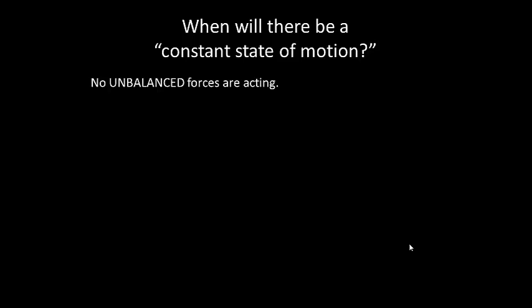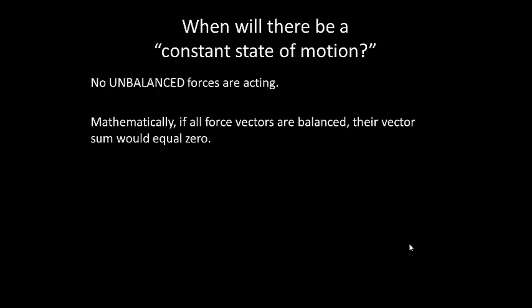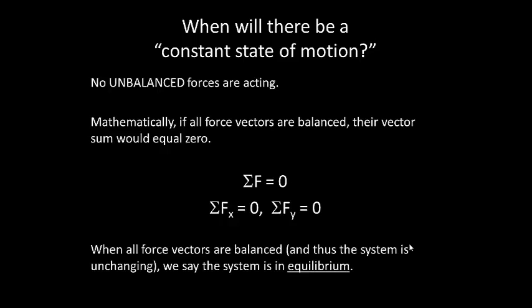So all the rights will equal lefts, all the ups forces will equal down forces. Mathematically, this is that all force vectors are balanced and their vector sum will be equal to zero. So we can break this up into the x direction and the y direction. The sum of forces in the horizontal direction needs to be equal to zero and the sum of the forces in the vertical direction needs to be equal to zero.